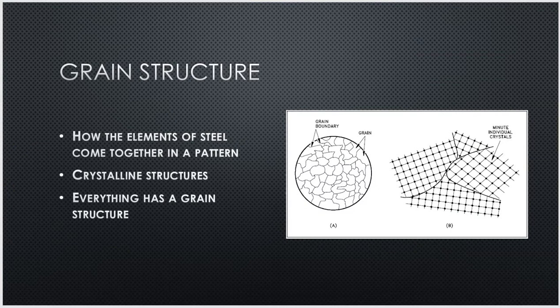Let's get into the grain structure. What is a grain structure? If we were to rip a piece of steel apart, or pull it until it breaks into pieces, and then look inside those breaks underneath a microscope, what we're going to be looking at is the grain structure — basically how the molecules of these elements bond to each other and layer up, essentially folding on top of one another to form these boundaries.